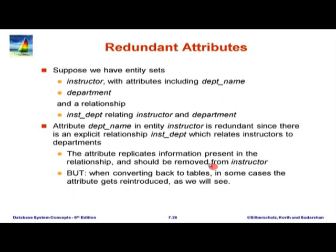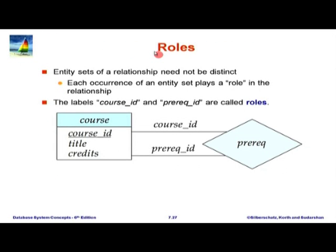A couple of other notations: we have the notion of a role. Pre-requisite is a relationship between a course and itself — one course is a pre-requisite of another. Which one is the pre-requisite is indicated by role labels on the edges: one edge is labeled course_ID and the other pre_rec_ID. Because both edges go to the same entity set, we need a role label. That completes the basic ER notation covered in this session.